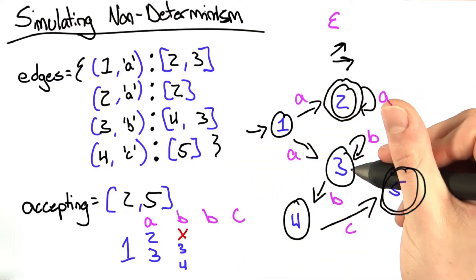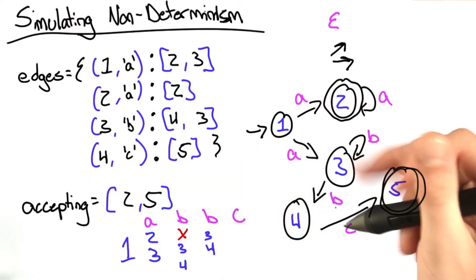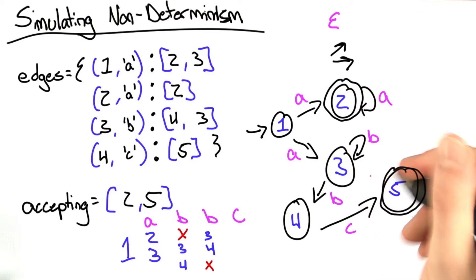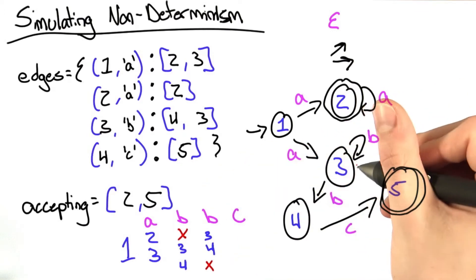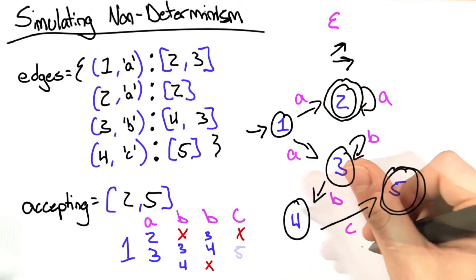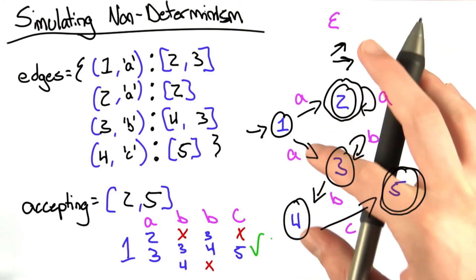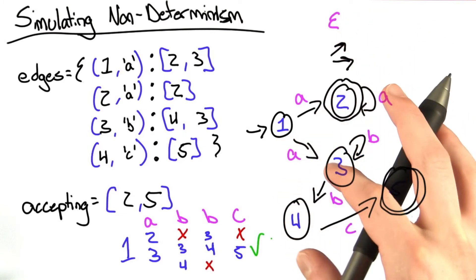From 3, we take another B to both 3 and 4. And from 4, there's nowhere to take this B to, so we failed. And lastly, we have a C. From state 3, there's nowhere to take this C. But from 4, we can take the C to 5, which is an accepting state. So now you hopefully feel pretty good with stepping through a non-deterministic finite state machine.